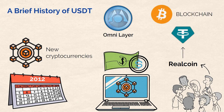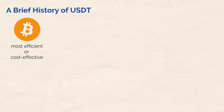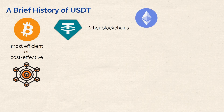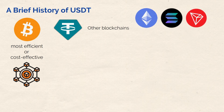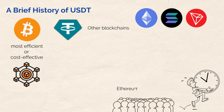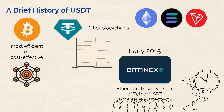Tether was the first blockchain-based platform to link real fiat currencies into the digital realm. In the beginning, Tether exclusively used the Bitcoin blockchain as the base layer, meaning most USDT coins were based on Bitcoin. However, since the Bitcoin ecosystem has never had the most efficient or cost-effective blockchain, USDT Tether soon launched on other blockchains as well, including Ethereum, Solana, and Tron, among many others.